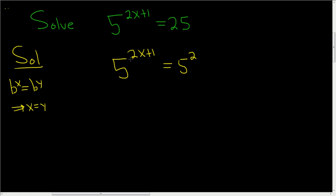So in this case, we have 5 to the 2x plus 1 equals 5 squared. So that automatically means you can set 2x plus 1 equal to 2.